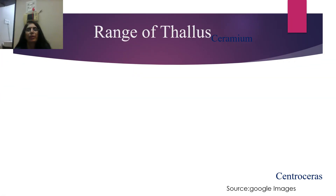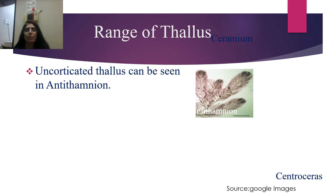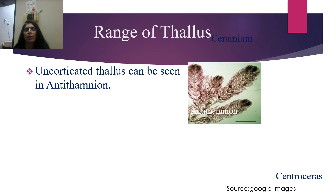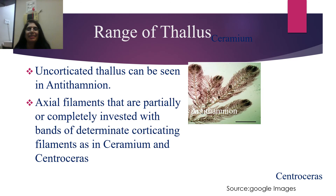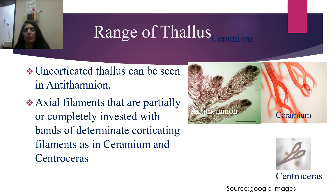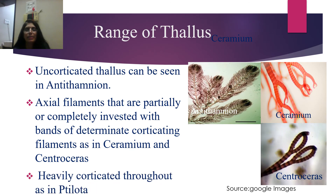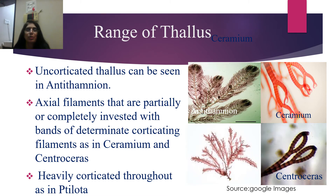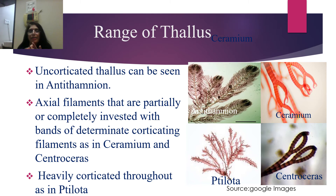In continuation of range of thallus, uncorticated thallus can be seen in Antithamnion — there is no cortication of the thallus, so the branch axis is bare and not covered by any cortex. Axial filaments that are partially or completely invested with bands of corticated filaments are seen in Ceramium and Centroceras, as you can see here. Besides this, heavily corticated throughout is seen in Tylota. So you saw: uncorticated as in Antithamnion, axial filament covered by corticating filaments as in Ceramium and Centroceras, and heavily corticated as in Tylota.